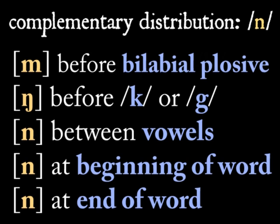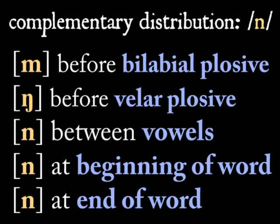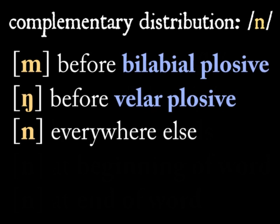Similarly, K and G are both velar plosives. We can say that /n/ shows up as that [ŋ] sound before a velar plosive, whether it's the voiced velar plosive G or the voiceless K. And then it seems to show up as [n] anywhere else, so between vowels, or before or after silence. In other words, at the beginning or end of a word.